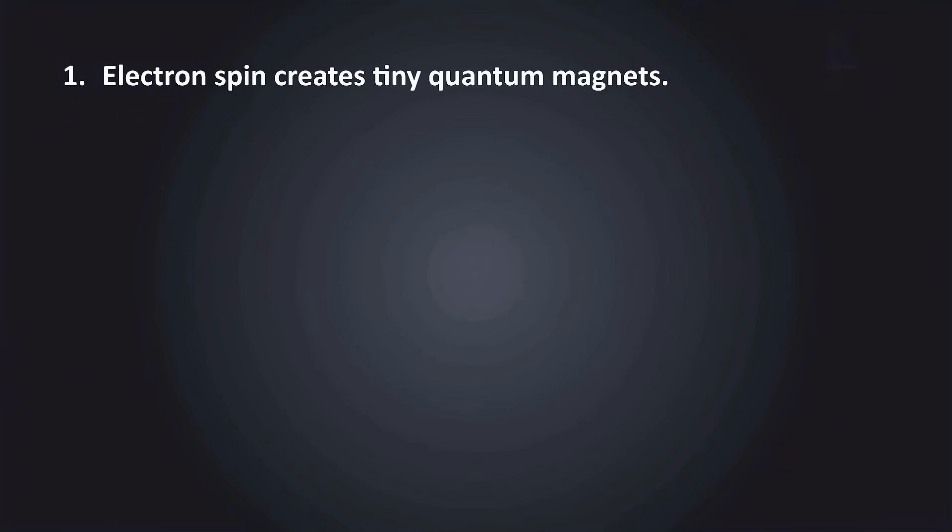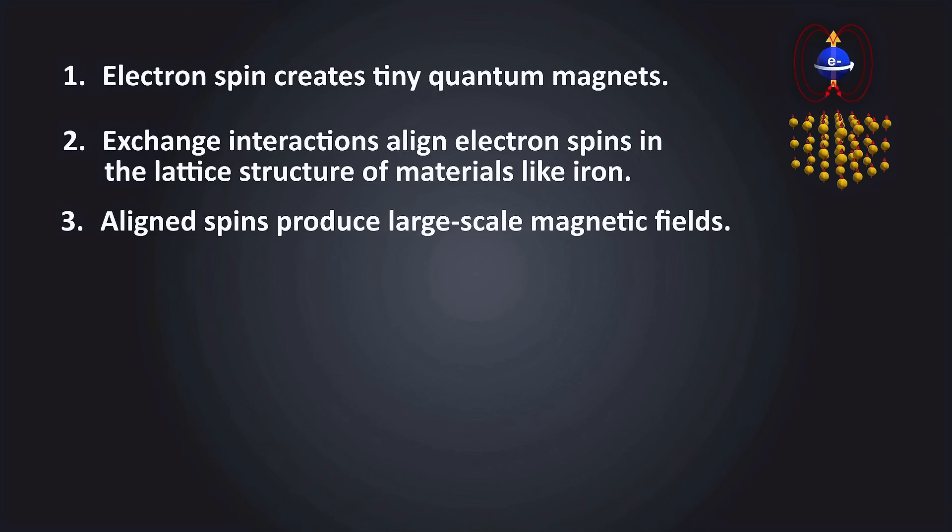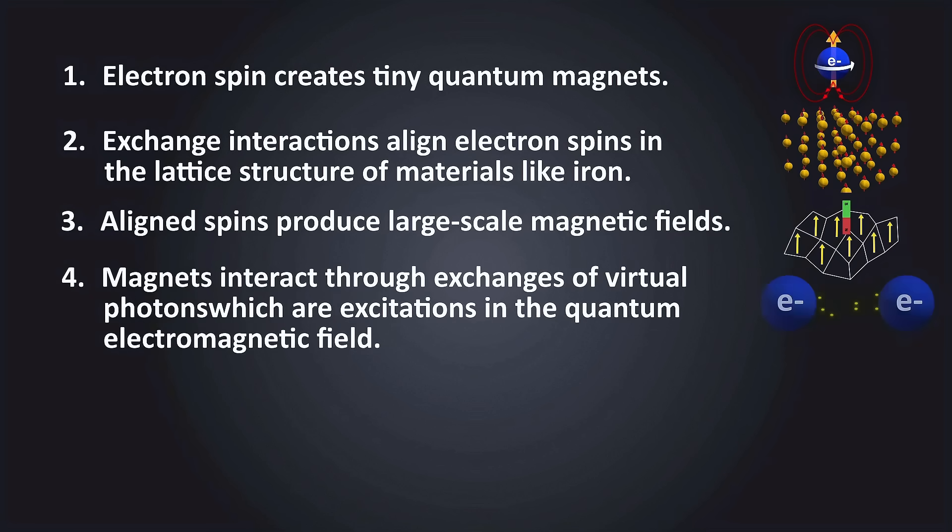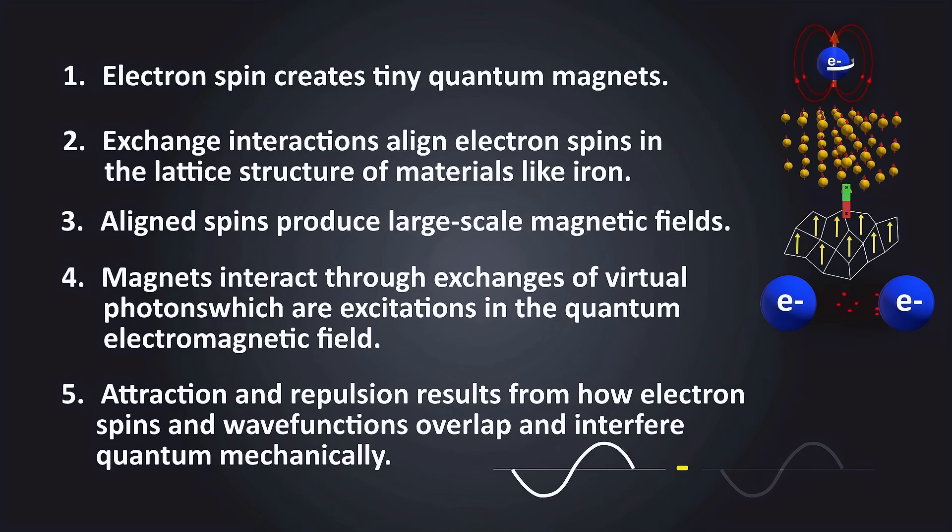We've covered a lot of material here, but this is the overall summary picture I want to leave you with. Electron spin creates tiny quantum magnets. Exchange interactions align electron spins in the lattice structure of materials like iron. Aligned spins produce large-scale magnetic fields. Magnets interact through exchanges of virtual photons, which are excitations in the quantum electromagnetic field. Attraction and repulsion results from how electron spins and wave functions overlap and interfere quantum mechanically. I hope this gives you a deeper understanding of magnetism than what you may have been taught in school.